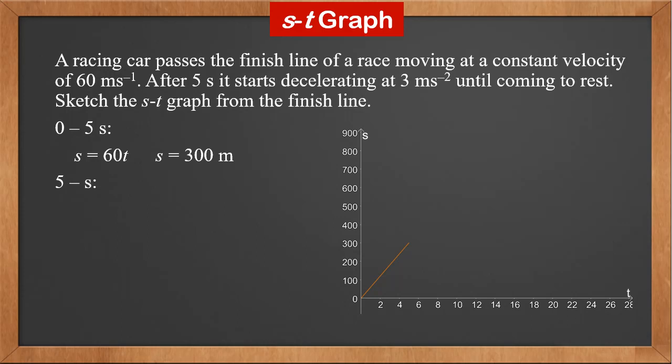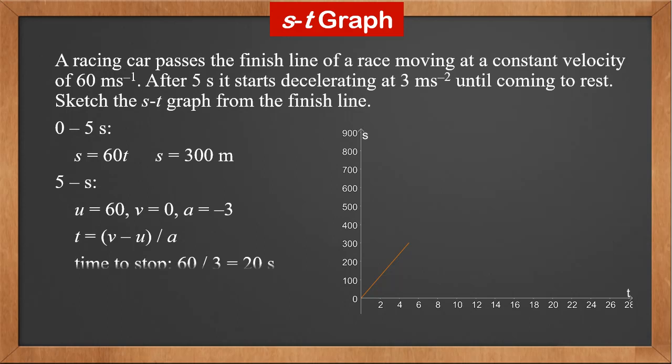From the 5th second on, the car moves at a constant acceleration until it comes to rest. V is 0, U is 60, A is minus 3. Using the formula T equals V minus U over A to find the time it takes to stop: it is 60 over 3, which is 20 seconds. Adding the first 5 seconds, we need to sketch the curve to 25 seconds.